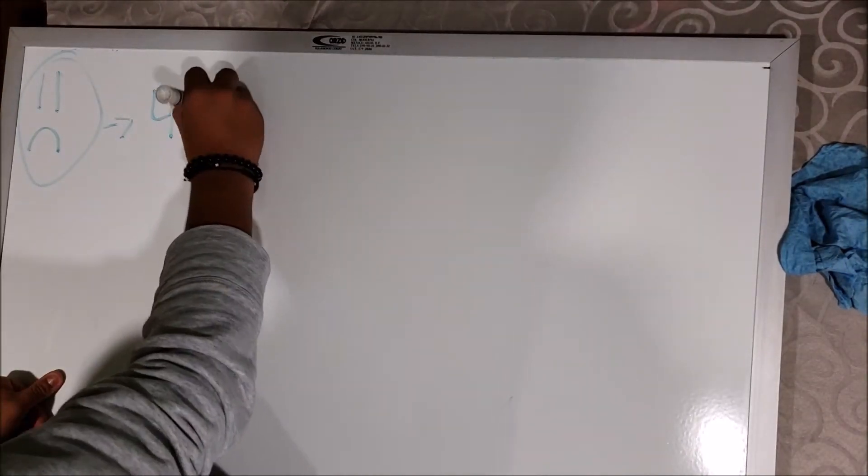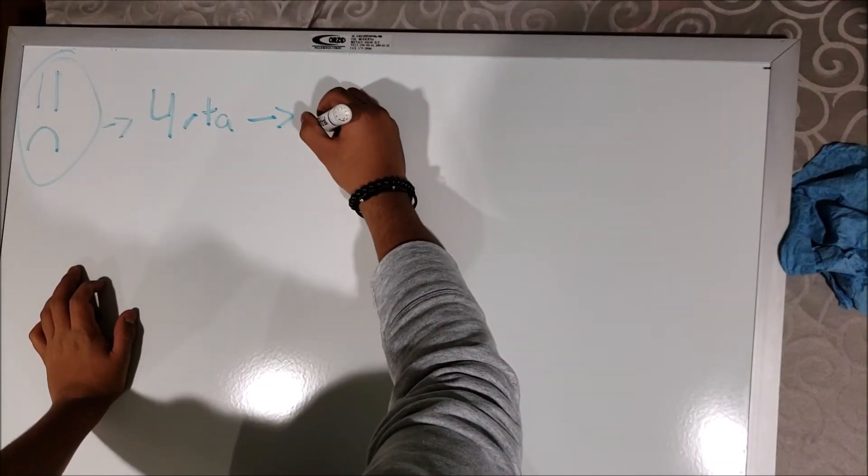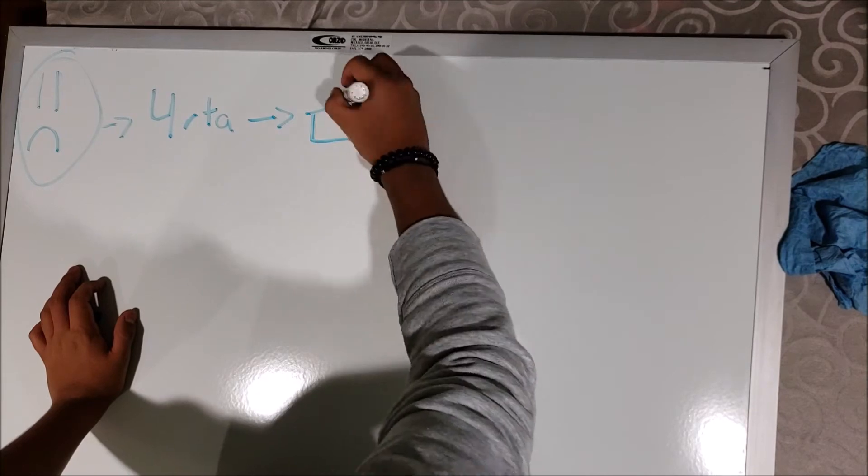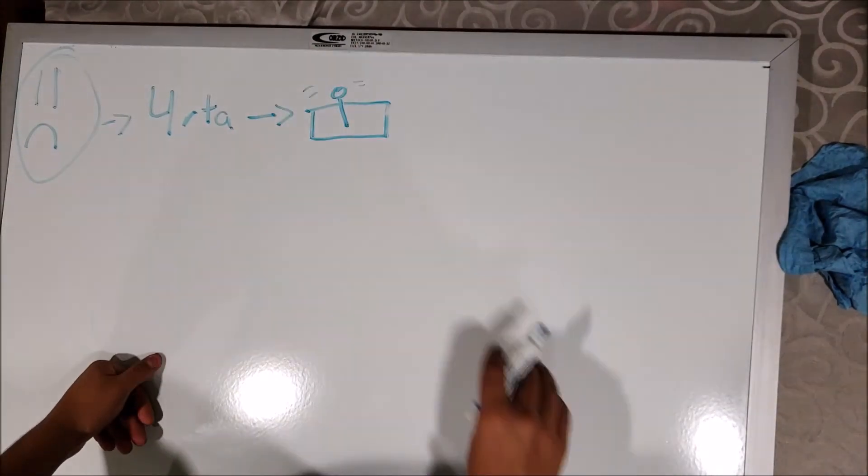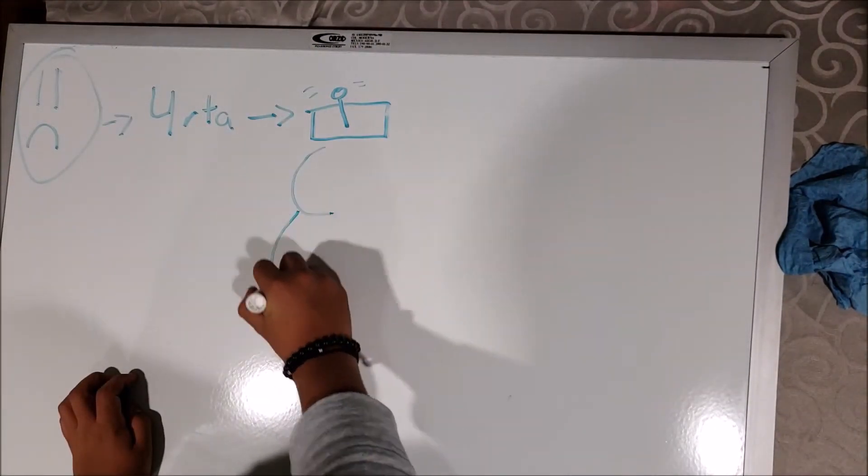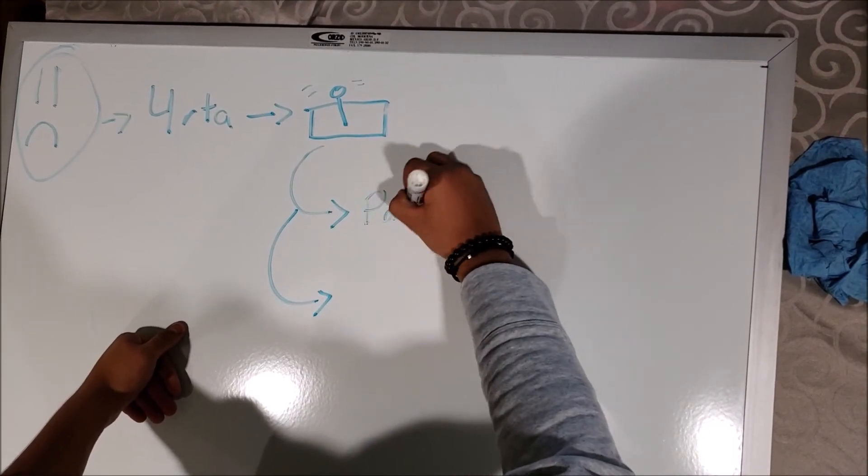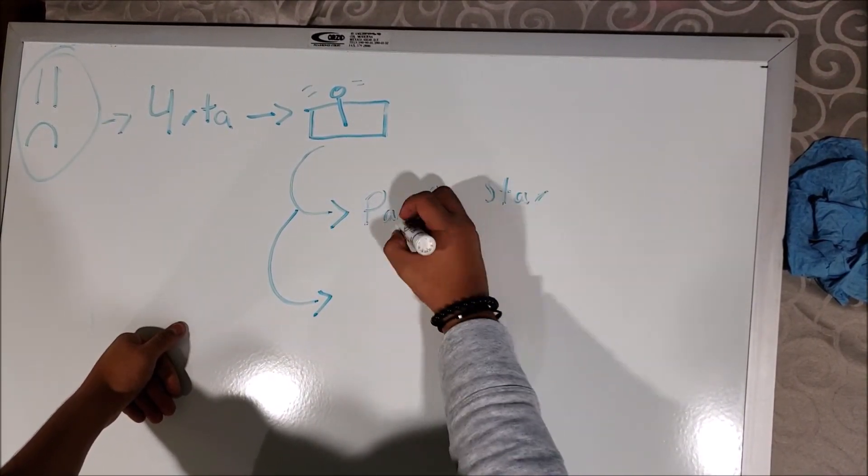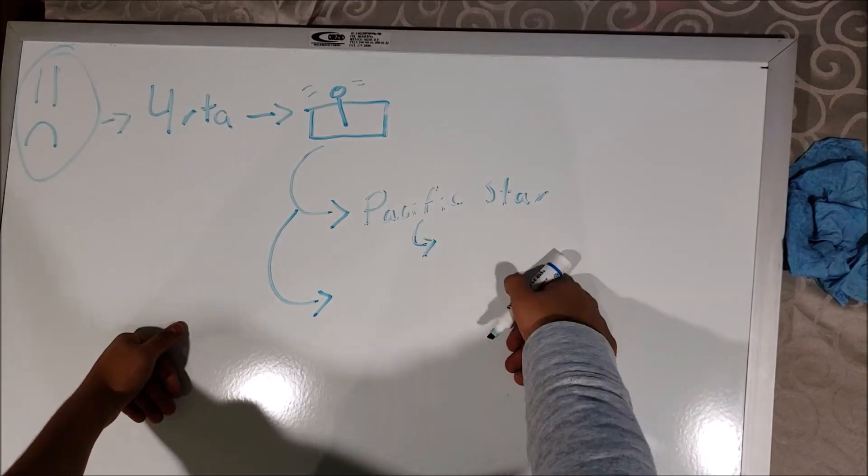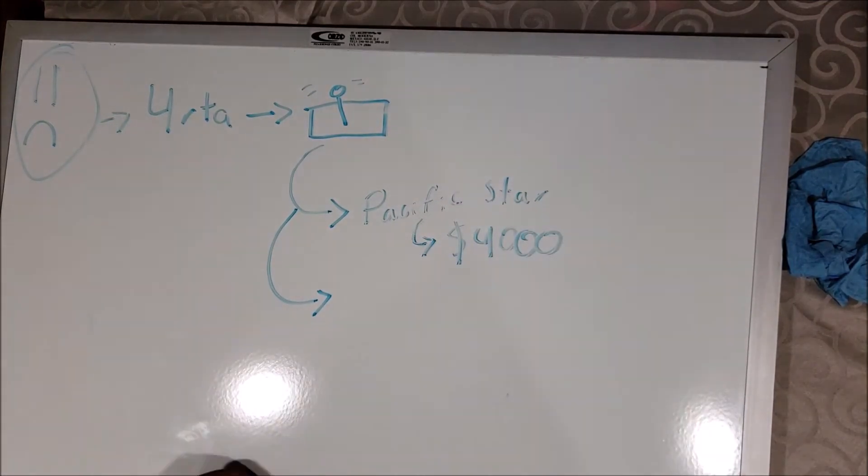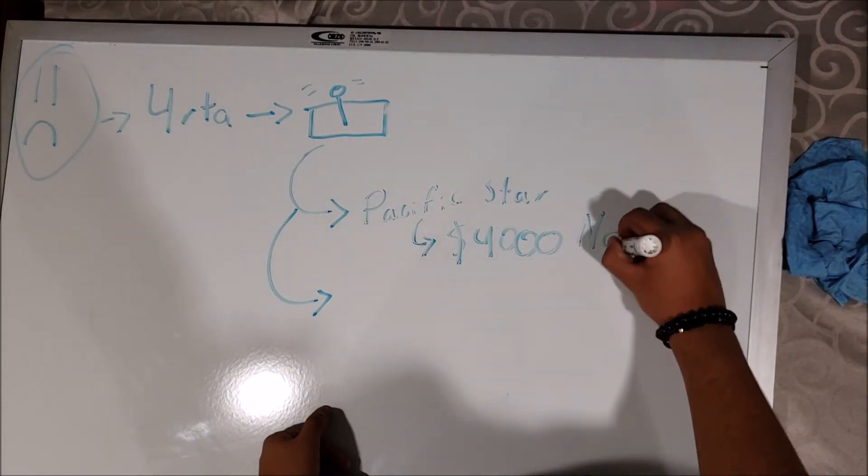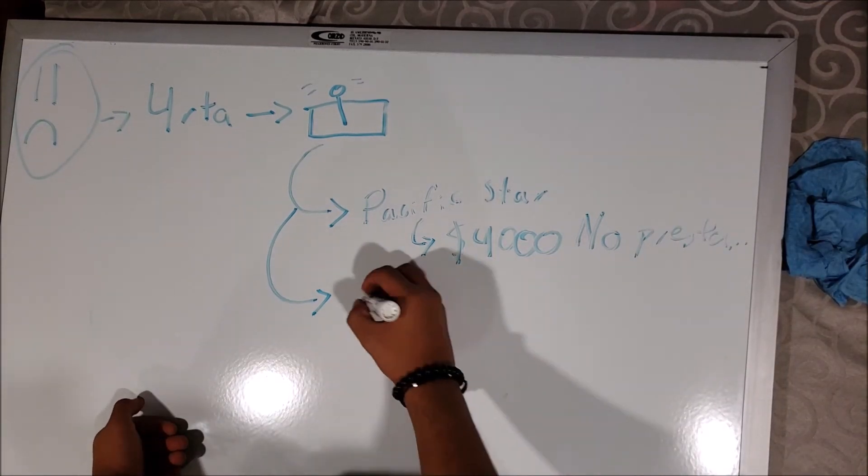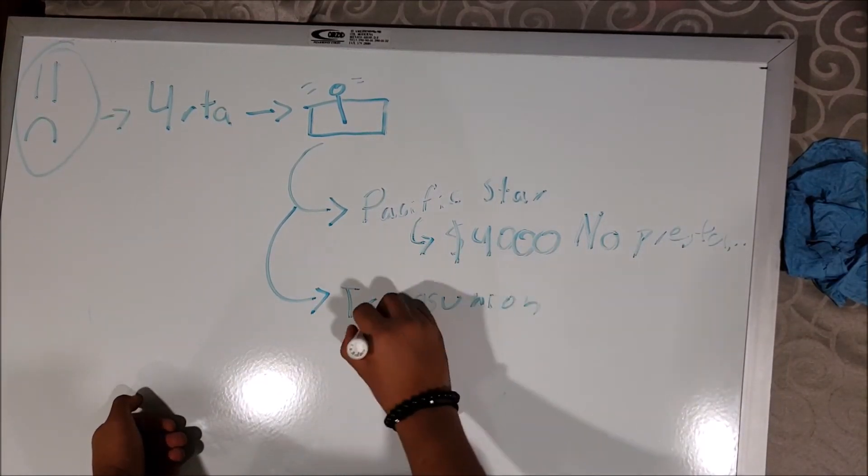Lamentablemente, nuestra cuarta y última opción fue conseguir trabajo por medio de palancas. Así conseguimos nuestros últimos dos empleos. En la empresa Pacific Star, donde ofrecían un sueldo de $4,000 pesos sin prestaciones, y en la empresa Transunion, donde ni siquiera ofrecían paga, únicamente ofrecían la experiencia laboral.